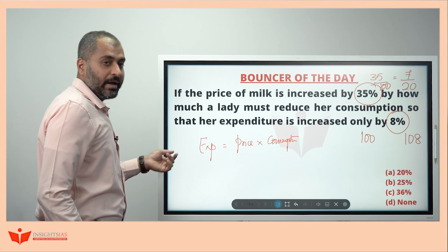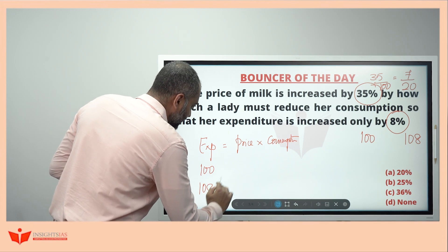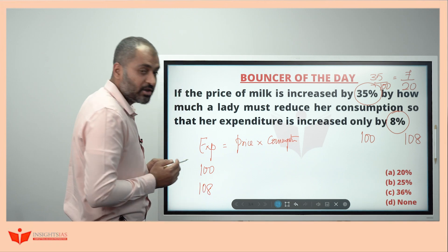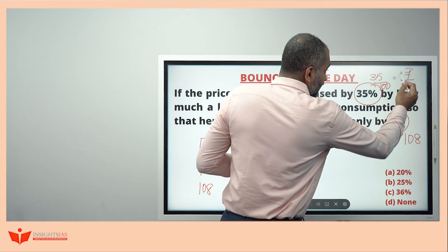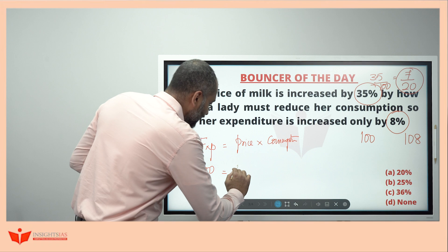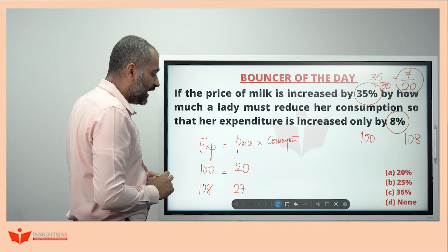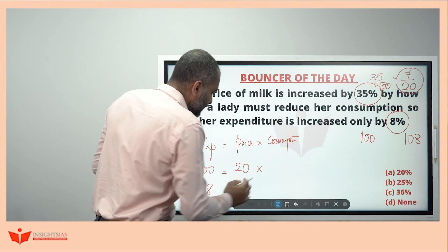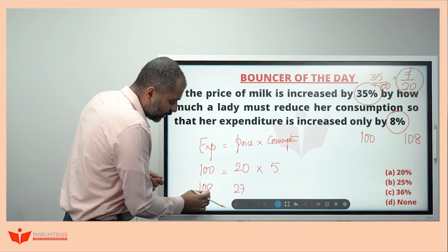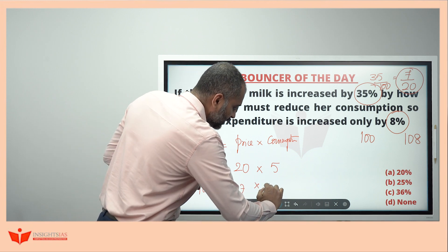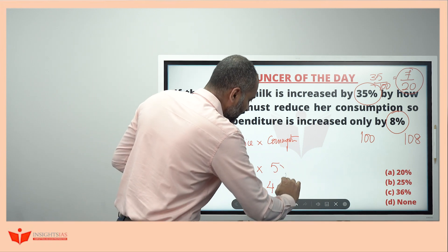Expenditure has changed from 100 to 108. That's what 8% increase. If this changes from 100 to 108, the price is changing from 20 to 27, that's what 35% increase. Then the consumption has to change. To get 100 here, if this is 20, this has to be 5. If this is 108, if this is 27, this has to be 4. Consumption is changing from 5 to 4.